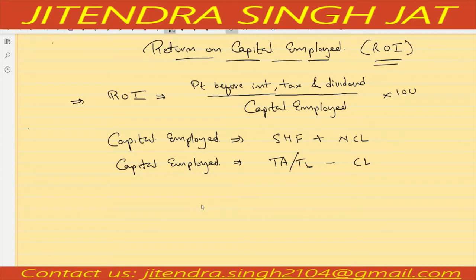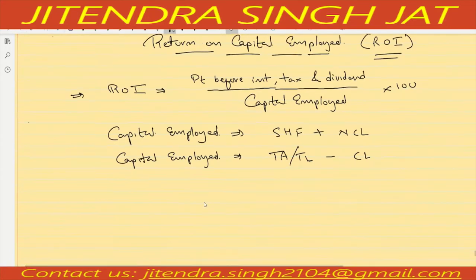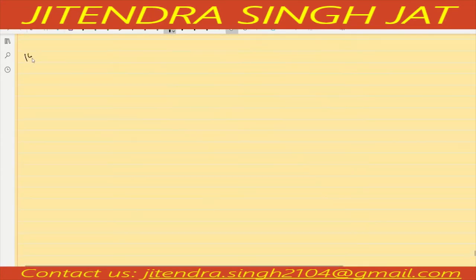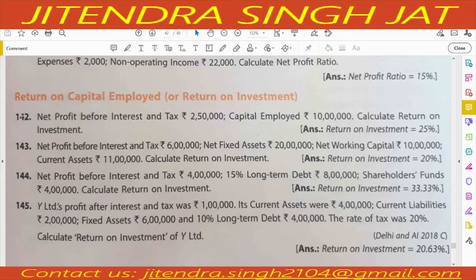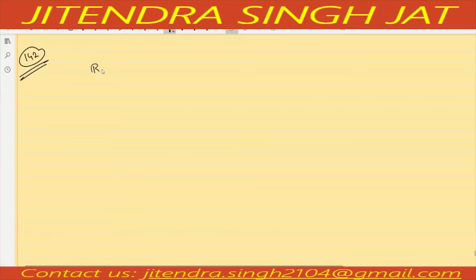Question number 142: Net profit before interest and tax is given directly as 2,50,000 and capital employed is given as 10 lakh. So 2,50,000 divided by 10,00,000 multiplied by 100 is equal to 25 percent.